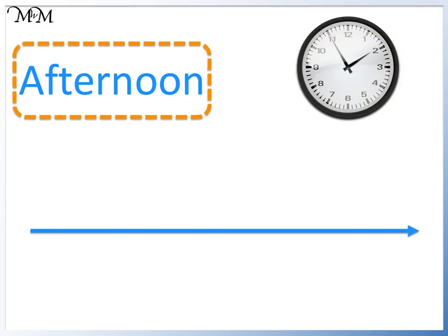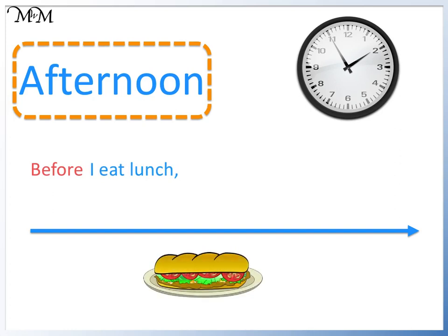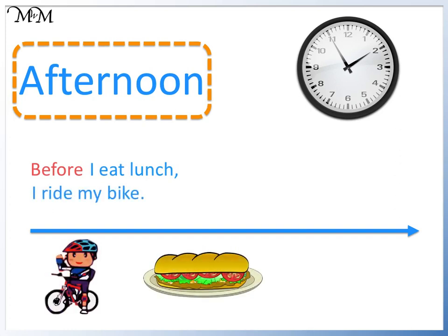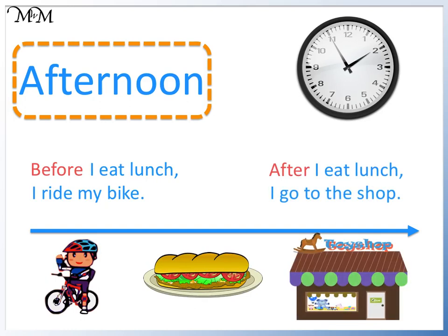Here is the order of the afternoon activities. Before I eat lunch means that I ride my bike and then have lunch. After lunch means that I eat lunch and then go to the shop.